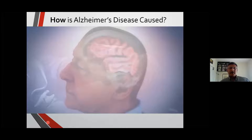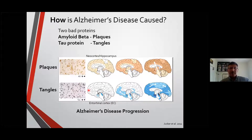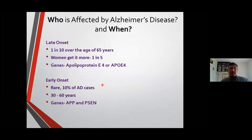So you understand that beta amyloid and tau proteins lead to plaques and tangles. One of them is attacking the hippocampus and another is attacking the entorhinal cortex — these are two regions of the brain that are really important for memory.